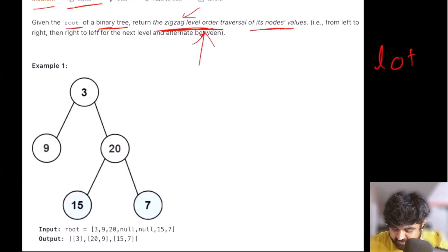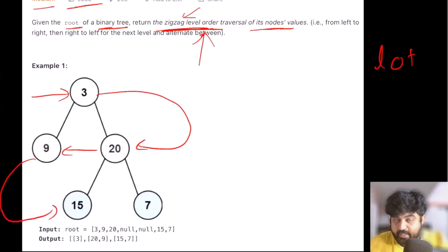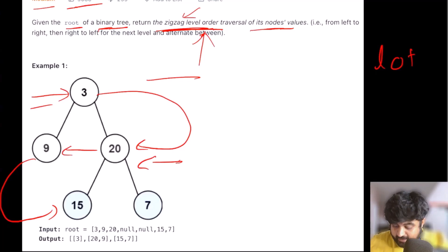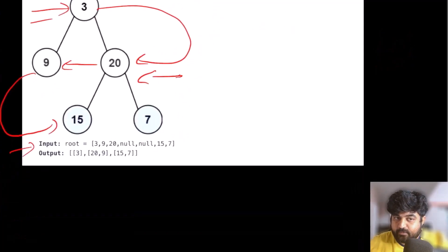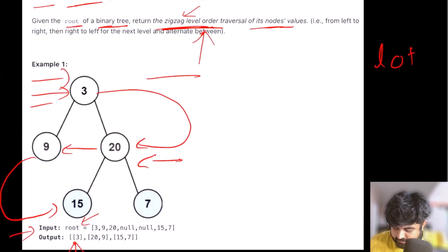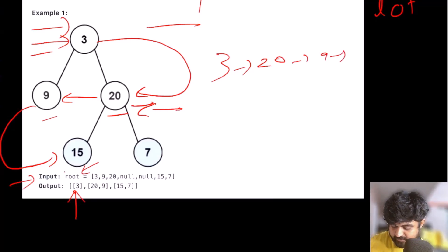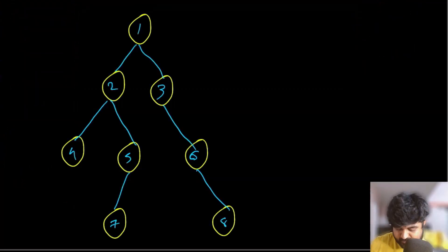In zigzag fashion, we start from the root node going left to right, then the next level goes right to left, and we keep alternating. So for one level we go left to right, next level right to left, then left to right again. In the example, we visit 3, then 20 and 9, then 15 and 7.